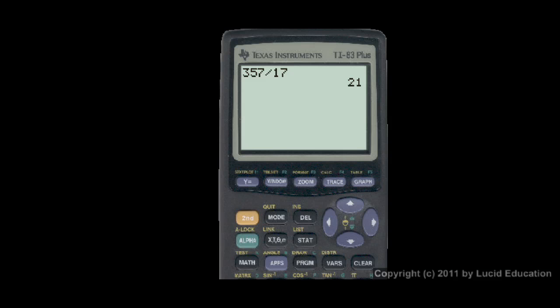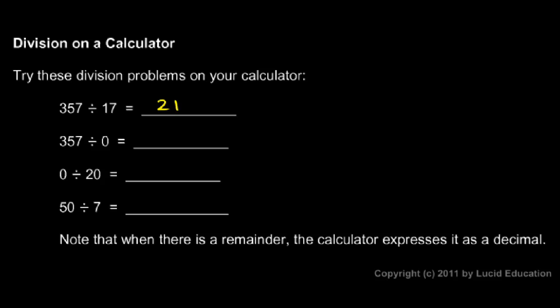Now 357 divided by 0 - watch what happens here. I'll clear this, type 357 divided by 0, and hit enter. This gives me an error - you see there 'Error: Divide by 0.' I'll just hit 1 to quit and clear. So in the notes, 357 divided by 0, you can write 'error' or 'undefined,' indicating to the reader that division by zero is undefined.